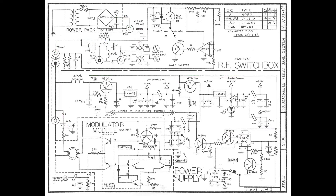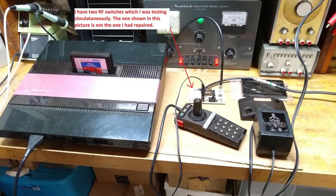Now that we've covered the theory of operation for the RF switch, it is time to discuss the issue I was having with the switch and what I did to fix it. When I connected the Atari 5200 to the TV via the RF switch and powered it up, I did not get any video, even though the power LED on the 5200 console was lit.